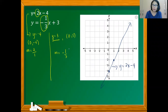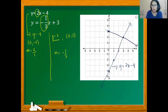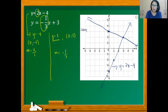Now plotting (0, 3) and applying the slope of negative one-third — moving down 1 unit and running 3 units to the right — then connecting the two points gives the graph of y equals negative one-third x plus 3. The two lines intersect, so the system is consistent and independent, with one solution set at the point of intersection, (3, 2).